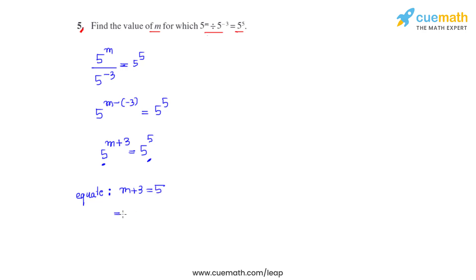So from this we get that m equals 5 minus 3, that means m equals 2. So for m to be equal to 2, the equality will hold good.